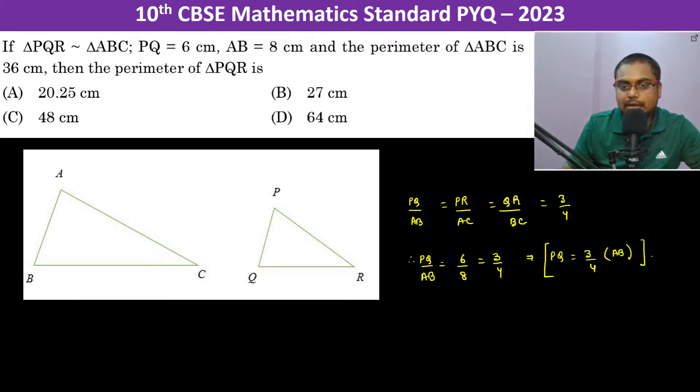Now, PQ by AB equals 3 by 4. Similarly, PR will also be 3 by 4 of AC, and QR will also be 3 by 4 of BC. This becomes equation 1, equation 2, and equation 3, because everything is equal to 3 by 4.